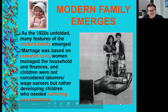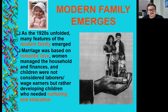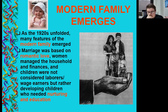The modern family emerged in the 1920s. Marriage was based on romantic love, women managed the household and finances, and children were no longer considered laborers or wage earners but rather developing individuals who needed nurturing and education. This is the beginning of education being provided to all people. Thanks to the 1920s, children were no longer viewed as factory workers but instead should be at home learning, reading, writing, and playing outside and being kids.